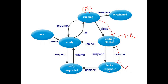Whenever the resources become free, those processes will be resumed back to main memory for execution. The blocked suspended state is the space in secondary memory where processes wait temporarily, and whenever that particular resource is available, they are moved from secondary memory back to main memory for execution.